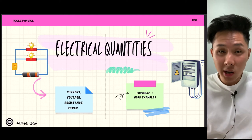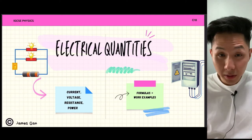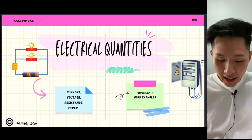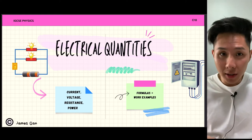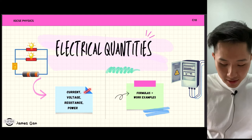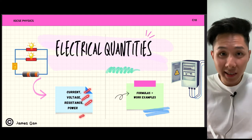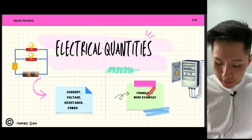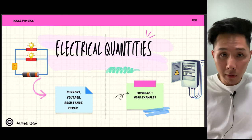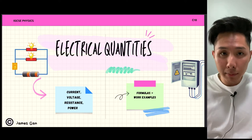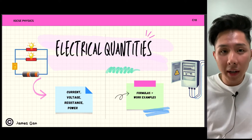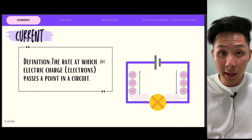Hello everyone, welcome back to this channel. In this video, we're going to look into electrical quantities in IGCSE physics. Here are some of the quantities that we'll learn: current, voltage, resistance, and power. The structure of this lecture is: first we'll introduce the formulas and concepts, followed by worked examples that help you better understand how to apply these formulas in your exam.